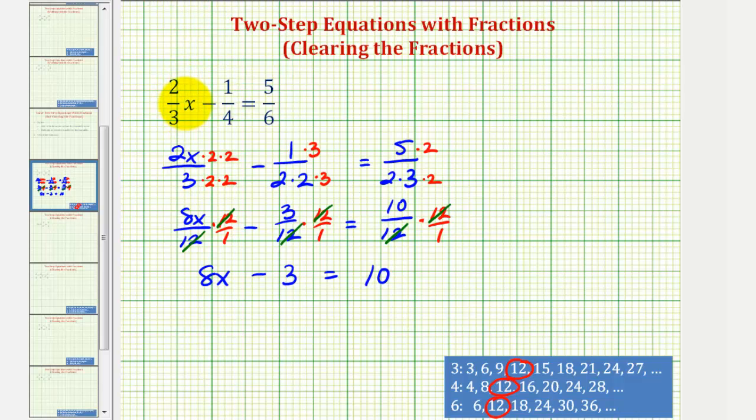So we'll write two x over three minus one-fourth equals five-sixths. We're going to multiply each fraction by twelve in this form, and we'll see the equation will be the same as we have here. So times twelve over one, times twelve over one, and times twelve over one. Before we multiply, we have to simplify each of these.